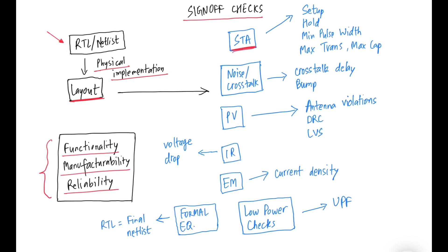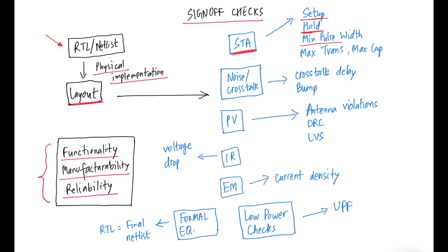The first sign-off category is STA or Static Timing Analysis, which involves timing-related checks. We must ensure setup timing is not violated on any path, otherwise we get functional failures or frequency issues. Hold violations must also be fixed to avoid functional failures. Clock min pulse width checks ensure clock signals don't become too narrow. Max trans and max cap violations can cause unnecessary short-circuit power or negatively impact cell delays and timing.